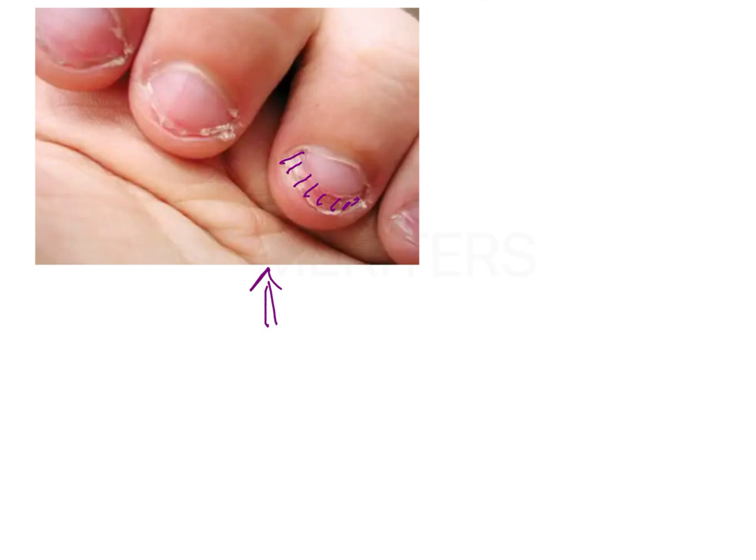This image can be given as an image-based question asking what type of habit the child is indulging in. One option could be thumb sucking because in thumb sucking we also see callus formation on the fingers.